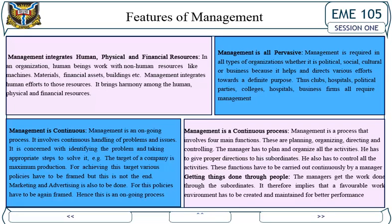Management is continuous — it is an ongoing process that involves continuous handling of problems and issues. It is concerned with identifying problems and taking appropriate steps to solve them. For example, if a company's target is maximum production, various policies must be framed, but that is not the end — marketing and advertising must also be done, requiring further policies to be framed. Hence, management is an ongoing process.